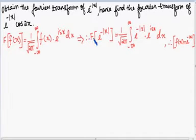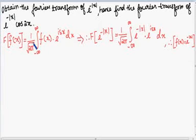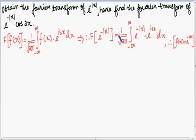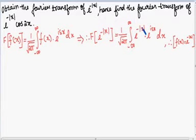The Fourier transform of e^(-|x|) will be given by substituting f(x) = e^(-|x|). So, F{e^(-|x|)} is equal to 1 divided by square root of 2π, integration from minus infinity to plus infinity of e^(-|x|) · e^(isx) dx.